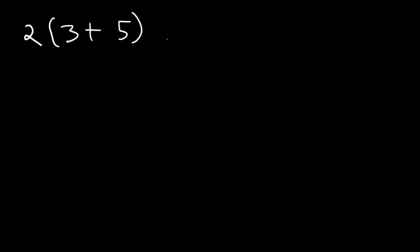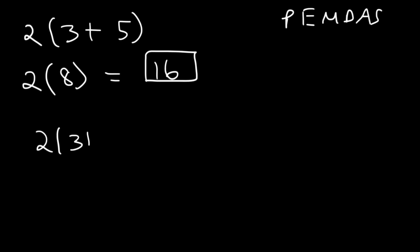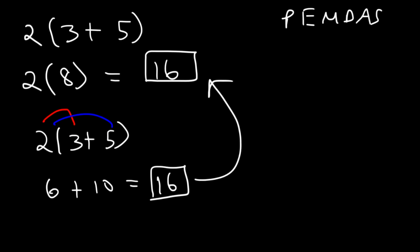Now let's deal with examples that have parentheses and exponents. What's 2 times the quantity 3 plus 5? Should we add inside the parentheses or multiply first? Ideally, work inside the parentheses first. 3 plus 5 is 8, and 2 times 8 is 16. Alternatively, distribute the 2: 2 times 3 is 6, and 2 times 5 is 10, and 6 plus 10 is 16 — same answer either way.